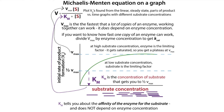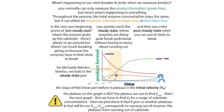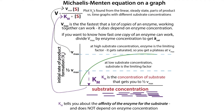When we're measuring the maximum velocity, we take a whole range of substrate concentrations and do individual velocity measurements, then we graph those to find the Vmax. The Vmax is like the maximum speed you can work at.